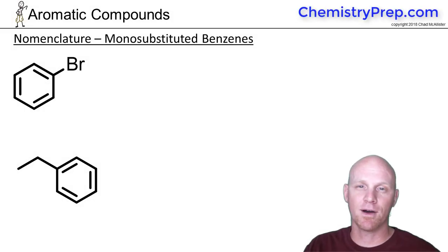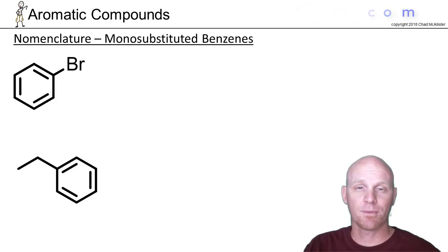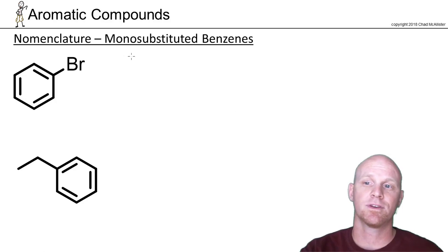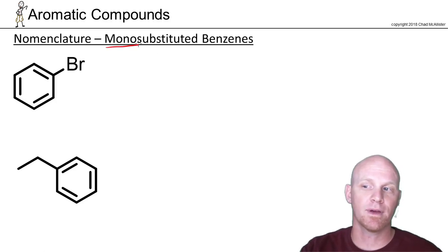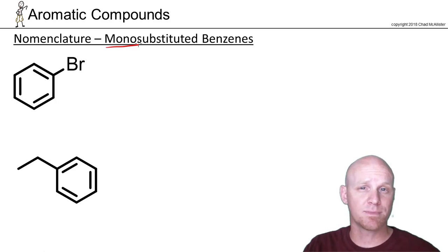We've got a chapter on aromatic compounds, and the most common representative is by far benzene. We're going to start by simply learning how to name different benzenes, beginning with monosubstituted benzenes — benzenes with one substituent — where you name benzene as the parent chain and just name the substituent that's attached.